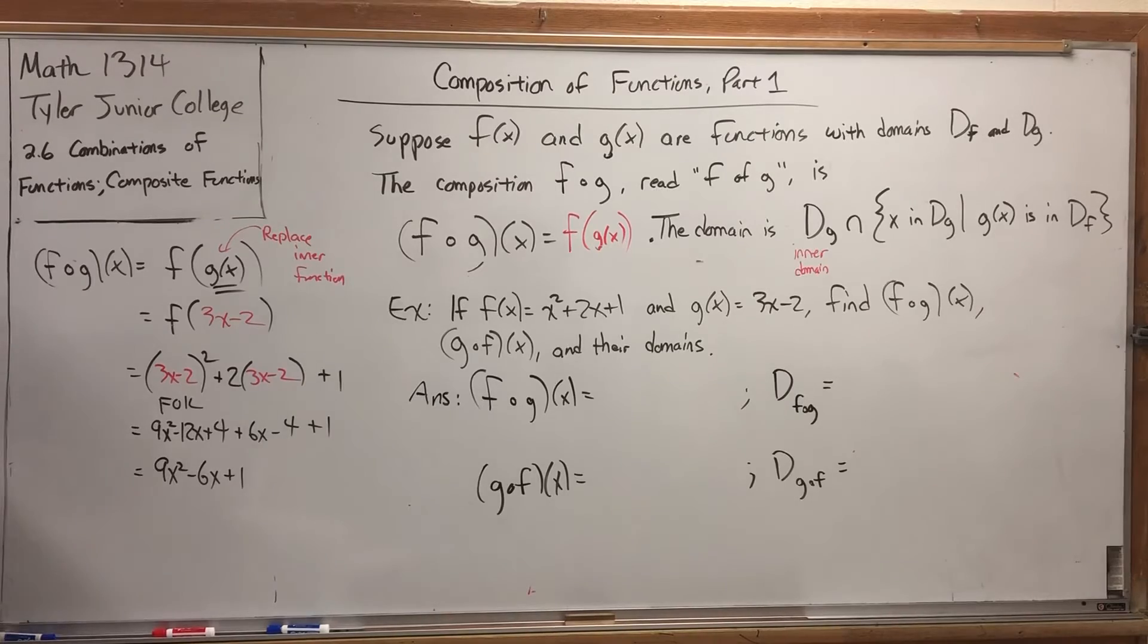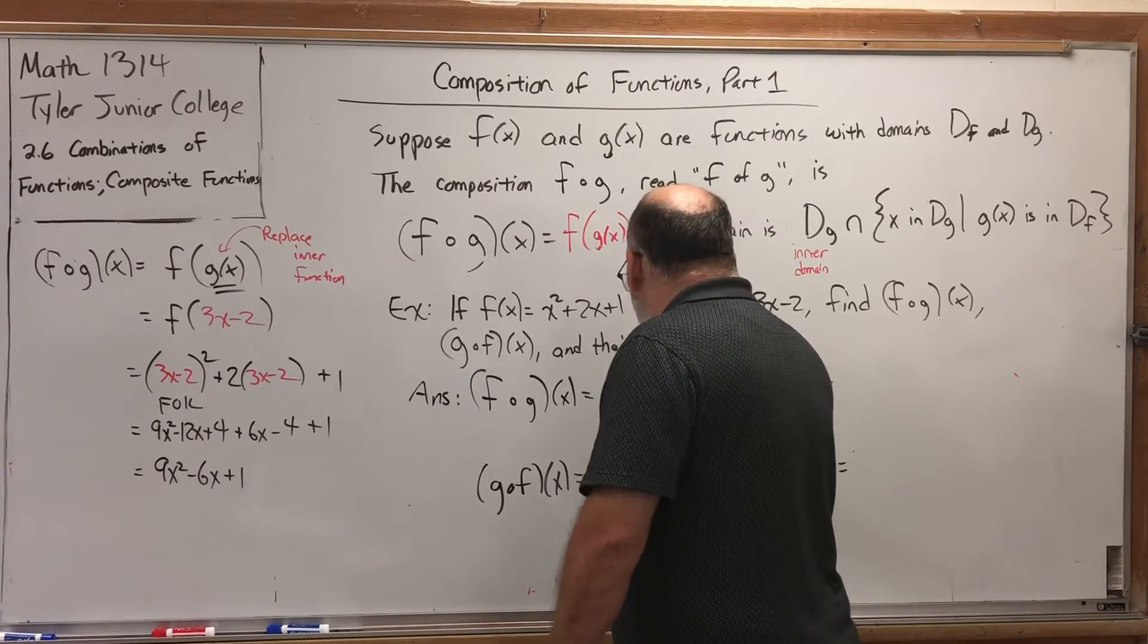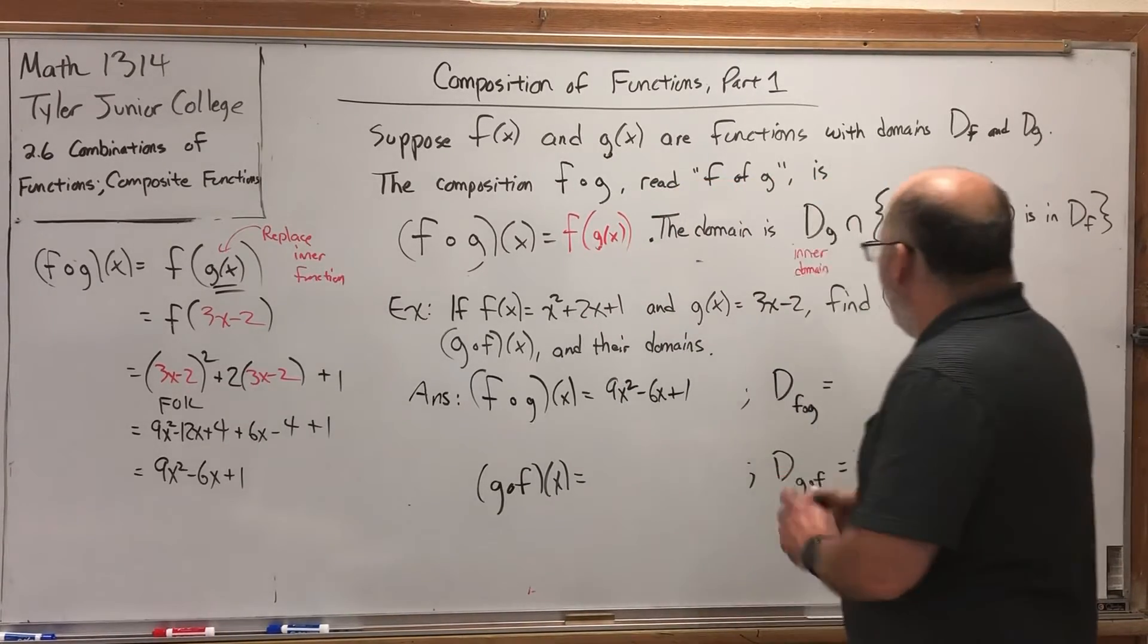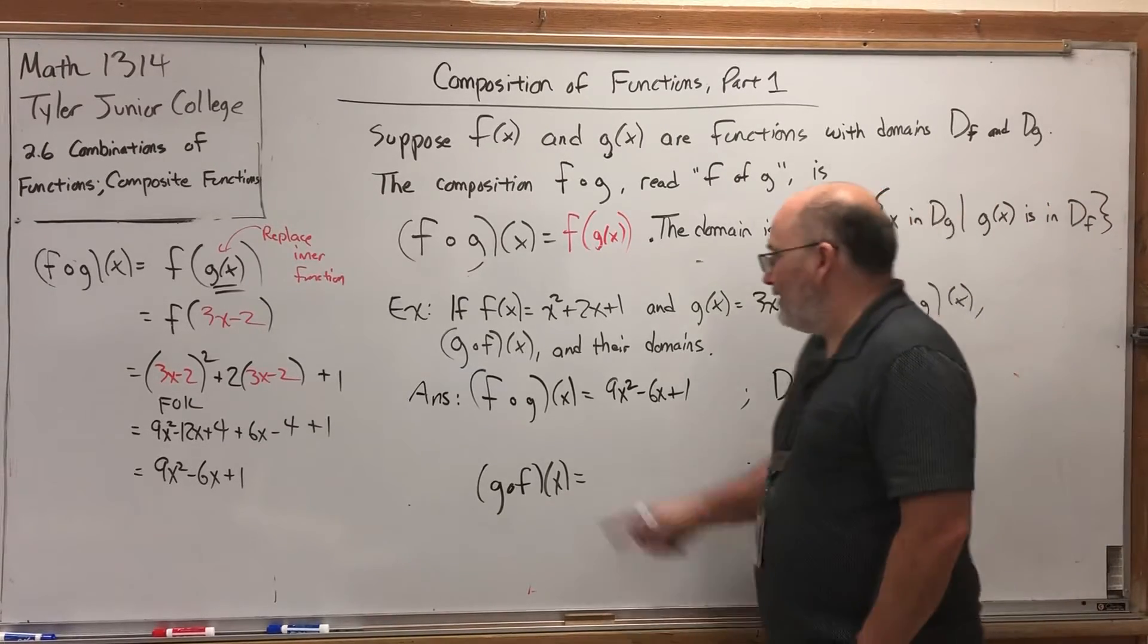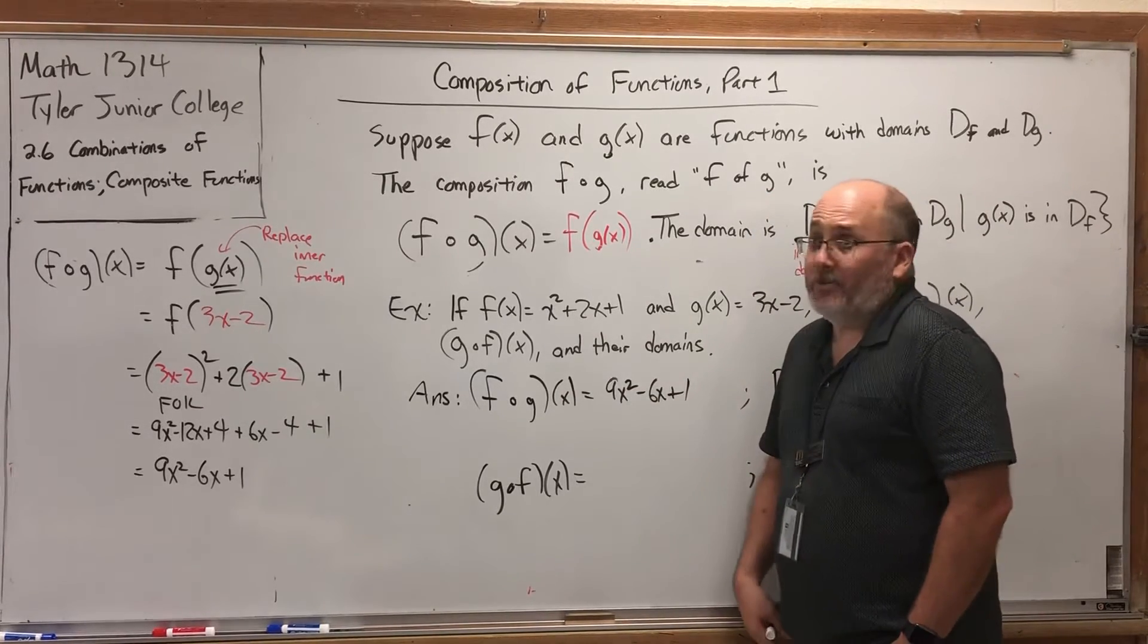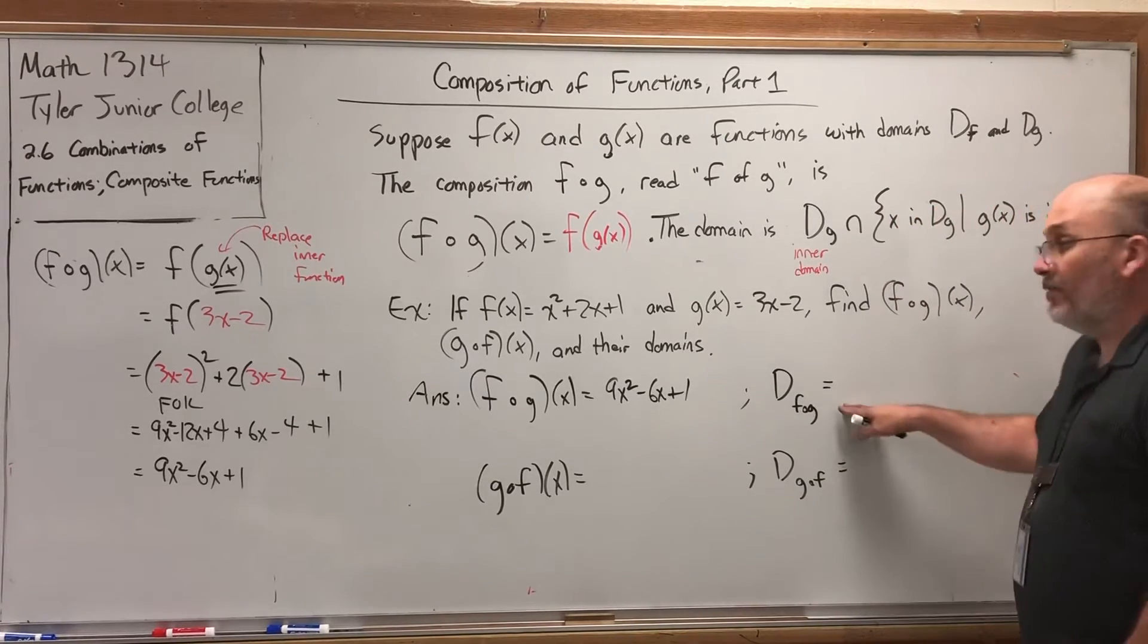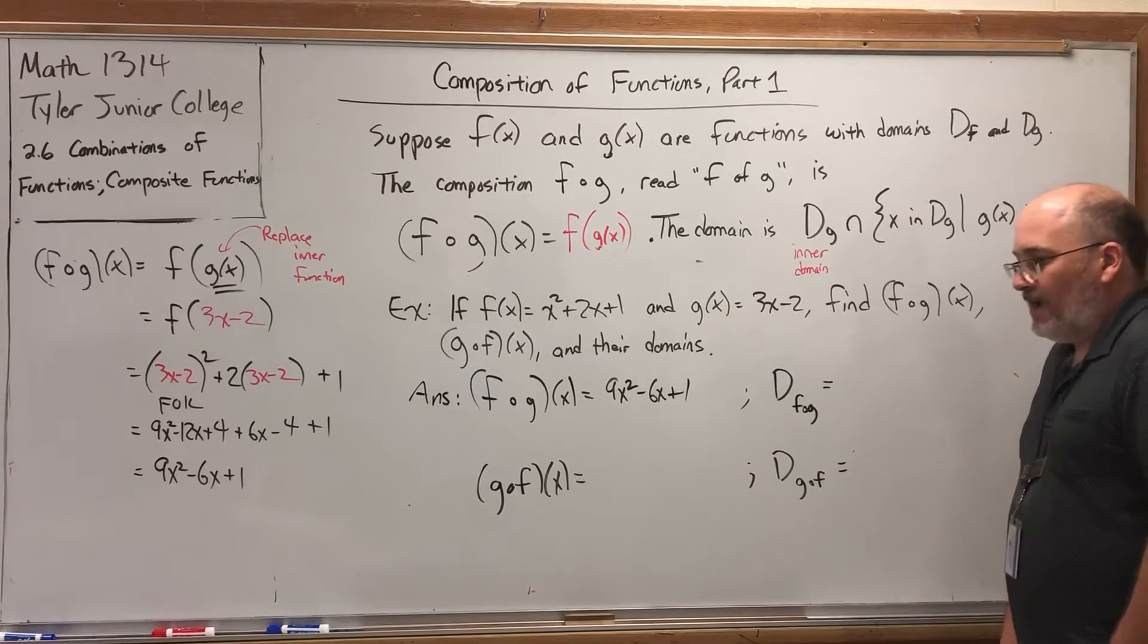So, that is f of g of x for this problem: 9x² - 6x + 1. I know some of you that are really on top of your game might be recognizing that this is (3x - 1)² and would have got us here quicker. That's not always going to be an option, so let's not worry about it. Oh, but let's worry about the domain. So, how do you find the domain of a composite function? Well, the definition is kind of rigorous, but it's actually easy to pull off. You just have to keep track of where the x is trying to go.